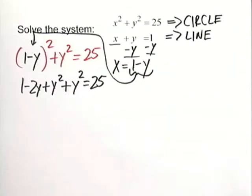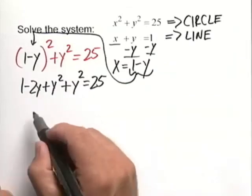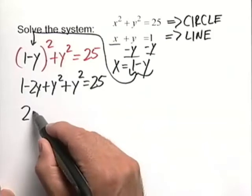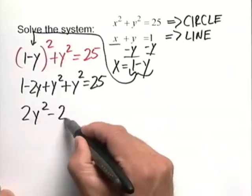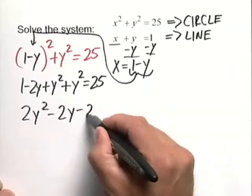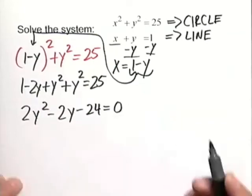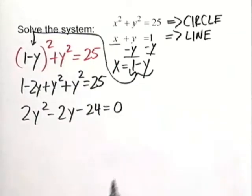We have a nice quadratic equation. Let's write that equation in standard form. We have 2y squared minus 2y minus 24 equaling 0. Remember, standard form is setting the whole left-hand side equal to 0.